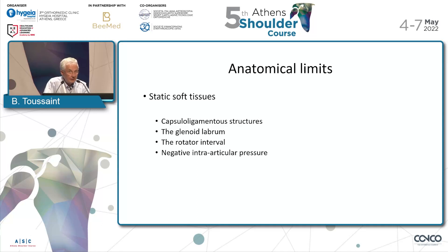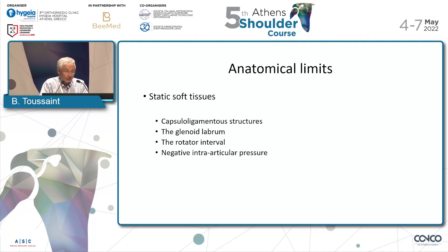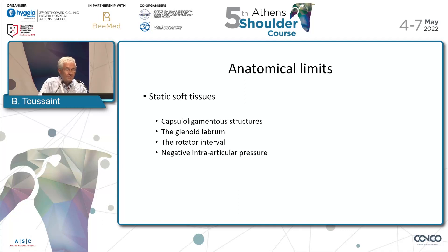That is the limit of the soft tissue procedure: if you have a big bone defect, the risk is failure of the soft tissue procedure if you don't address bone reconstruction as well, especially for the glenoid defect. If the glenoid defect is between 15 to 25% or more, you need to restore the bone aspect of the glenoid side to have the best stability. But there are also static soft tissue factors: capsuloligamentous structure, glenoid labrum, rotator interval, and negative pressure.